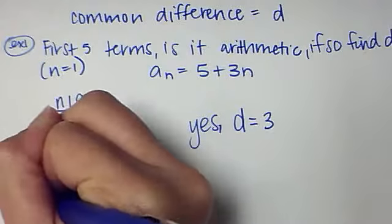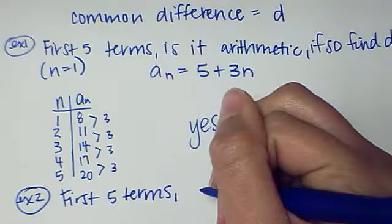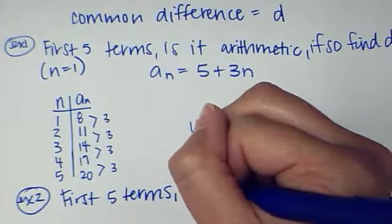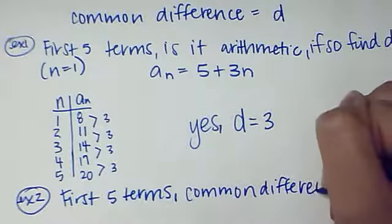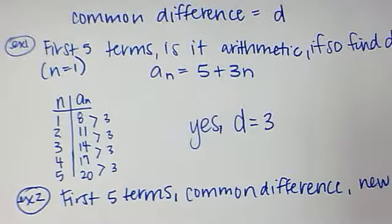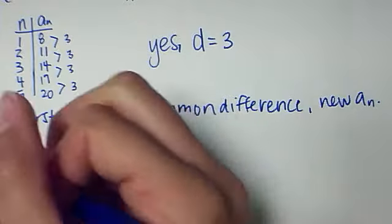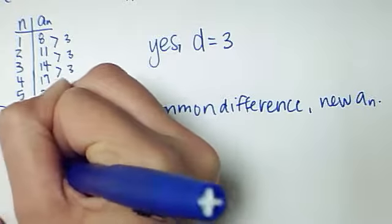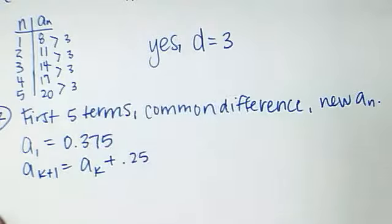Let's try another example. I want the first five terms again. And I want the common difference, and a new A sub N, because I'm going to give you one that is actually recursive. So that goes back to some stuff we did in a previous lesson. So, A sub 1 is equal to 0.375, A sub K plus 1 is A sub K plus 0.25.